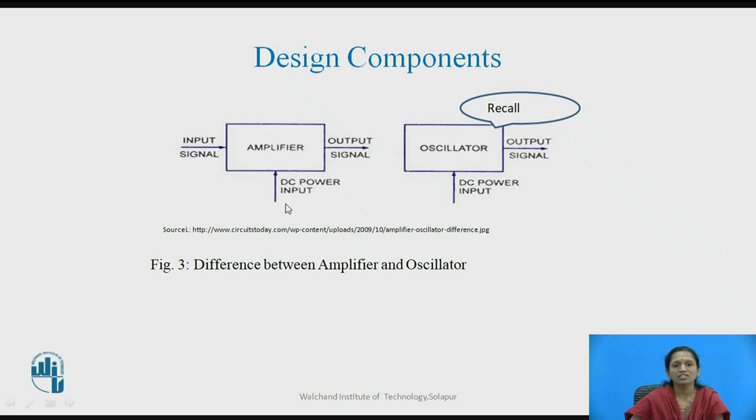An amplifier circuit needs DC supply for biasing and an input signal for operation. The amplifier circuit will give amplification of the signal at the output. Input must be present for the amplifier, but in the oscillator circuit, we need not give any input signal. Just with the biasing signal, that is DC input signal, we are generating the output signal, which is a sinusoidal signal or sweep signal or any kind of oscillations.